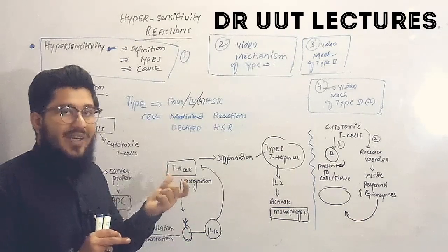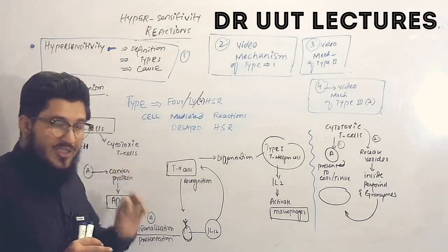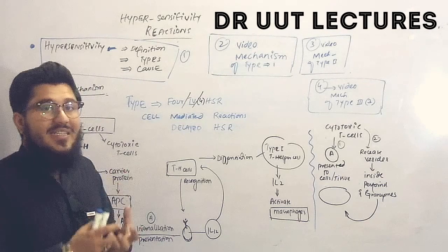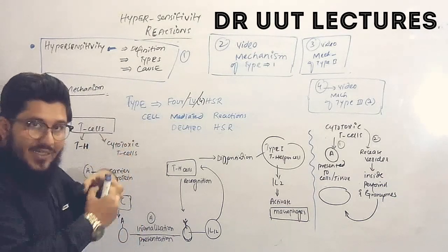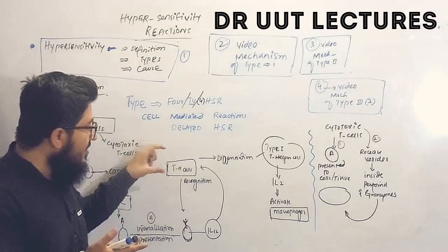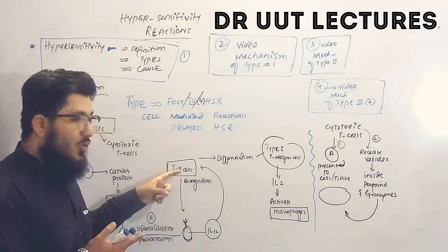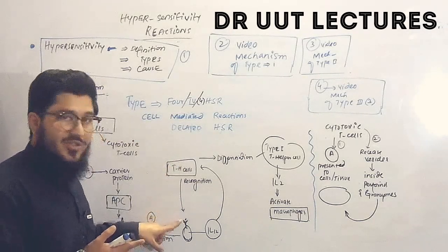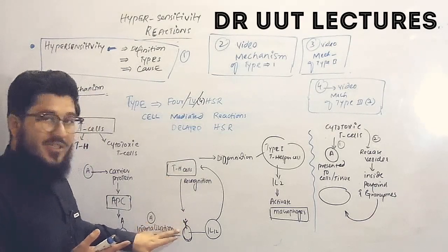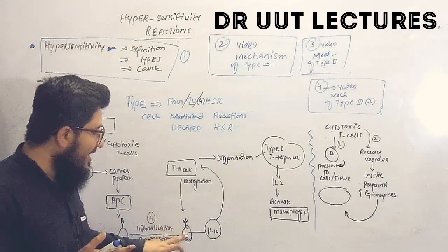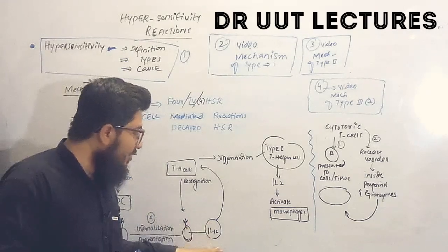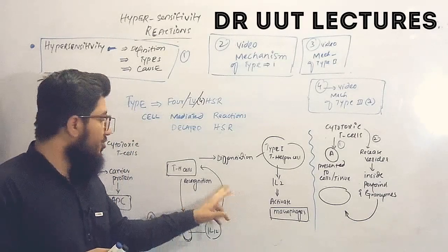After internalization, the antigen presenting cell takes a part of the antigen and presents it on the surface of the cell — this is why it is called an antigen presenting cell. It first internalizes the antigen and then presents it to the T helper cells. The T helper cells will then recognize and bind with the antigen presenting cells.